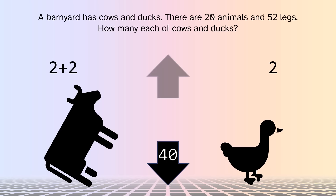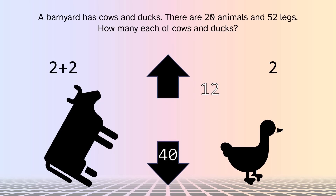How many legs in the air? There are 52 legs total, and 40 are on the ground, so there must be 12 legs in the air. Where do those legs come from? They can't come from the ducks, because ducks don't have any legs in the air. Those legs can only come from the cows. And since each cow has two legs in the air, there must be six cows. There are 20 animals total, six of which are cows, so there must be 14 ducks. No algebra needed — we just use the un-add function and then basic arithmetic.